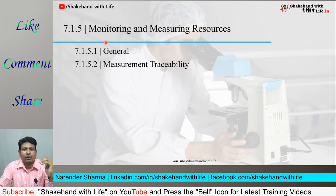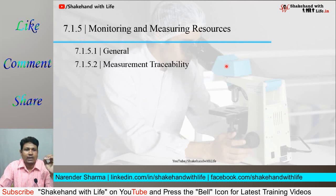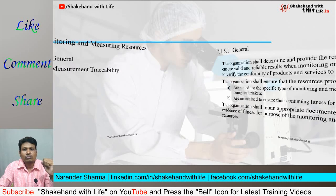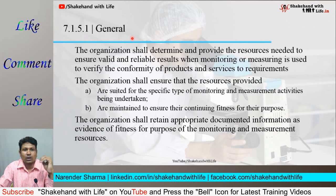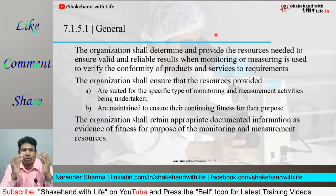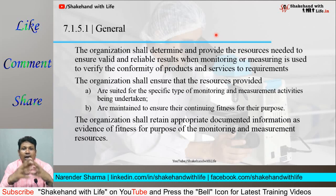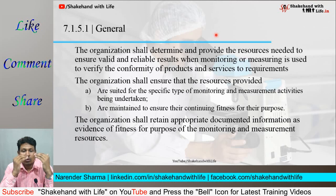Clause 7.1.5 is about monitoring and measuring resources, and it has two sub-clauses: 7.1.5.1 General and 7.1.5.2 Measurement Traceability. Clause 7.1.5.1 General is about providing the necessary resources for verifying the conformity of products and services — that is, the monitoring and measuring instruments using which an organization can verify the conformity of the products and services it is manufacturing.